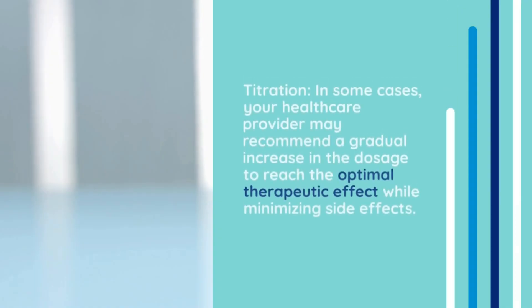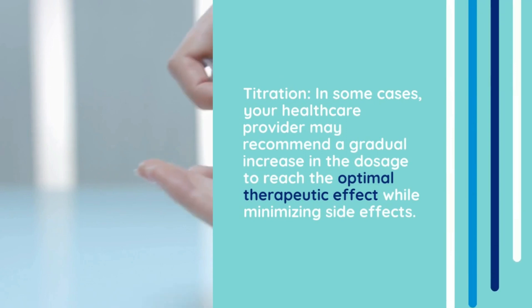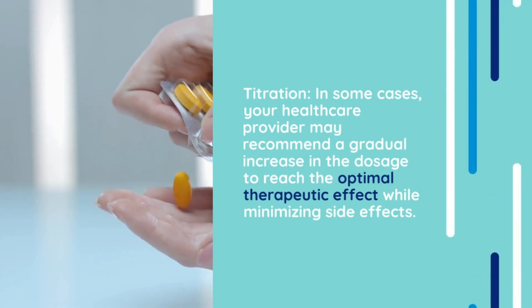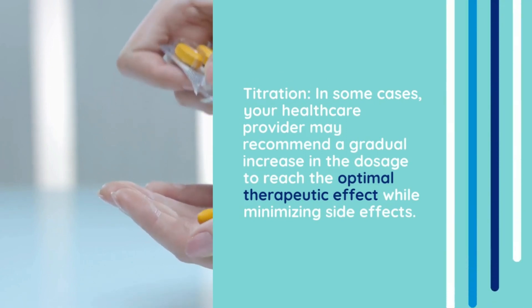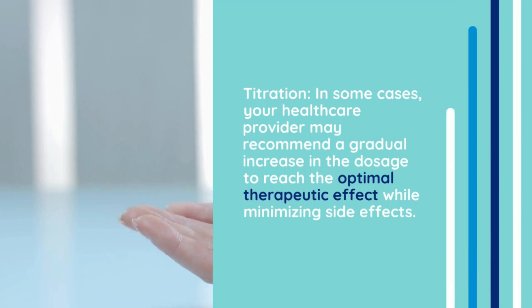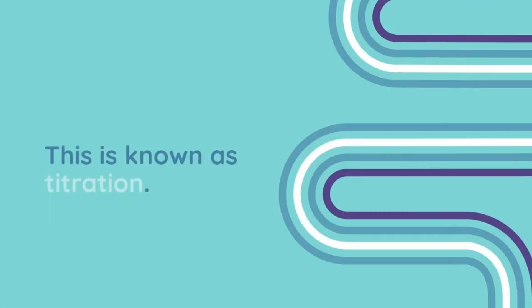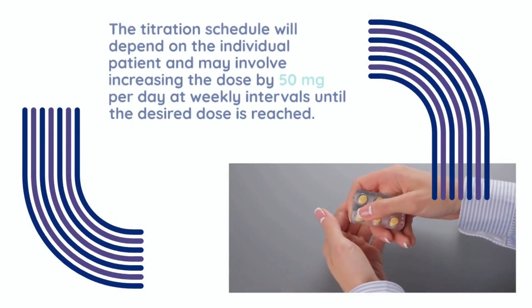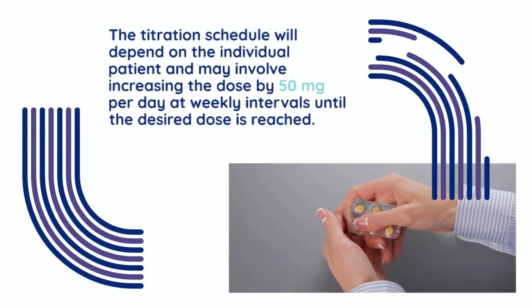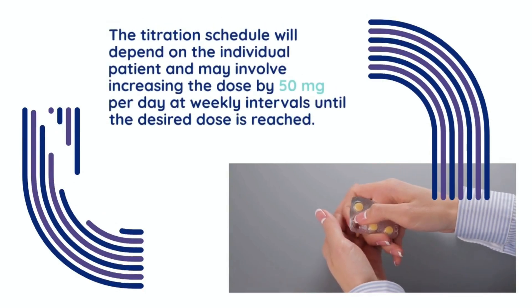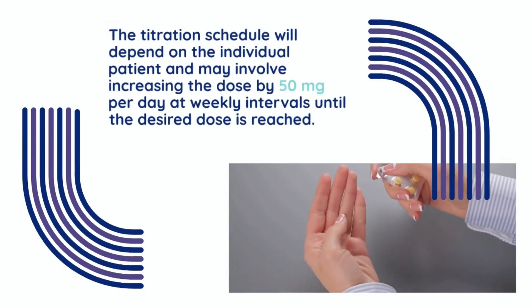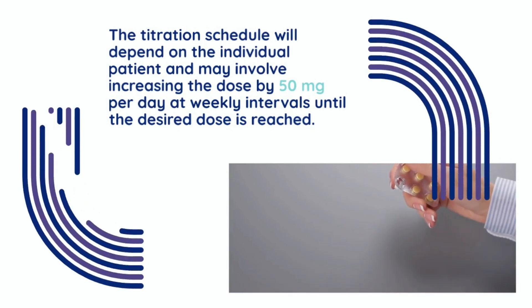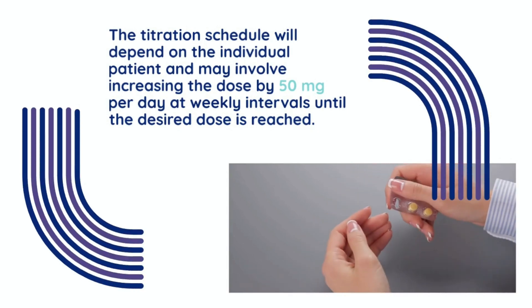The maintenance dose typically ranges from 50 milligrams to 200 milligrams taken twice daily, for a total daily dose of 100 to 400 milligrams. Titration: in some cases, your healthcare provider may recommend a gradual increase in dosage to reach the optimal therapeutic effect while minimizing side effects. This titration may involve increasing the dose by 50 milligrams per day at weekly intervals until the desired dose is reached.